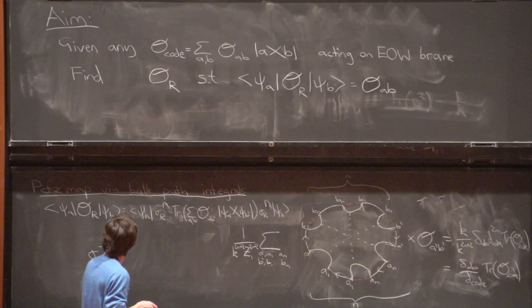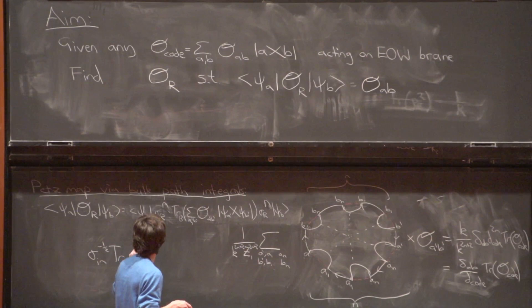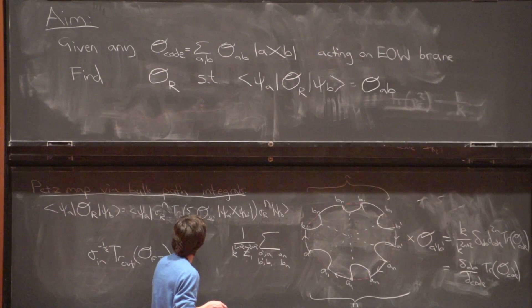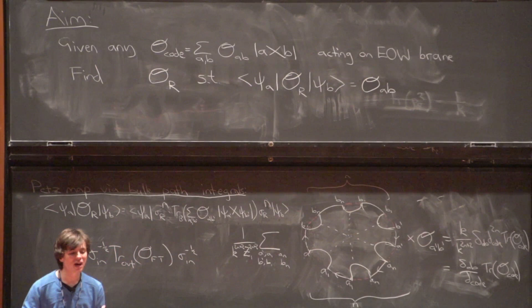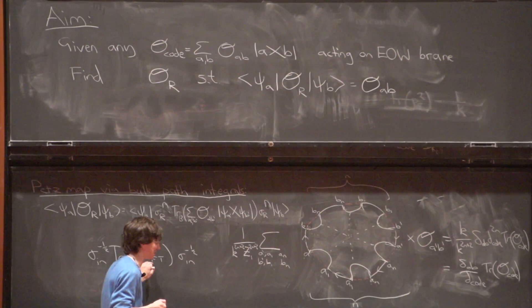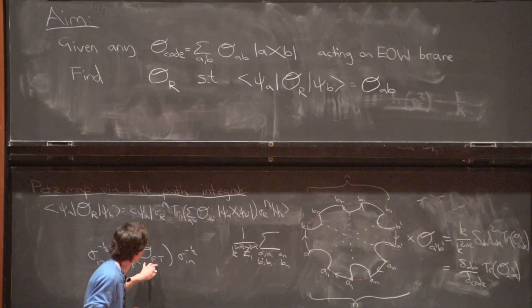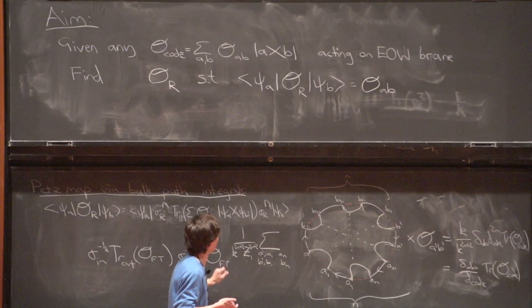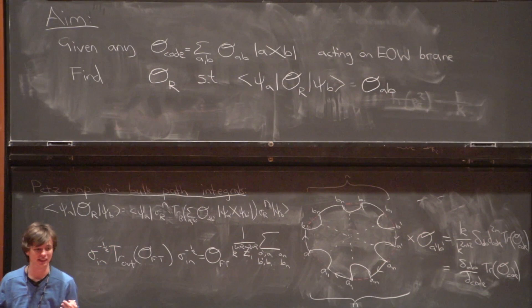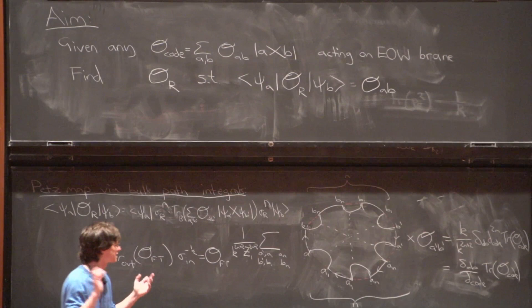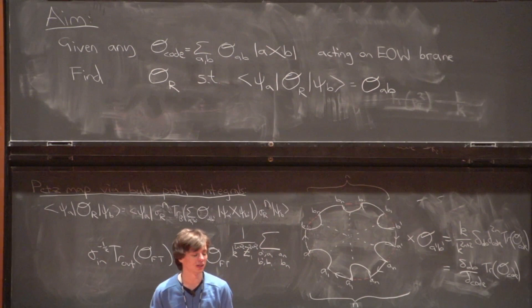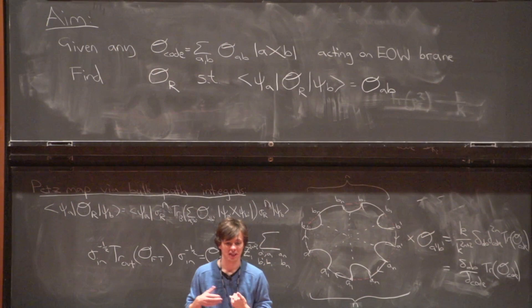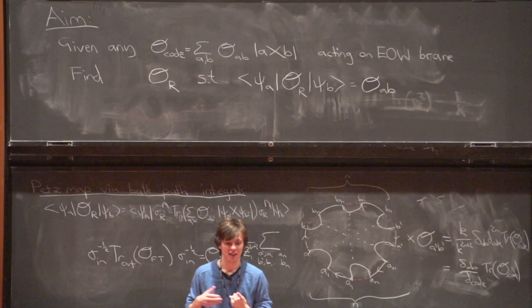When you look at this whole thing, what you find is that the resulting operator is a Petz map in the field theory: it takes the field theory bulk operator and applies a Petz map to make it an operator acting only on the interior of the black hole — or more generally, only in the entanglement wedge. It looks like σ^{-1/2} Tr_{out}[O_field theory] σ^{-1/2} on the inside. We know the Petz map works whenever all the information in the operator is acting in the stuff you kept: if our operator acts entirely inside, this thing just reproduces the field theory operator. And the most exciting thing is that when you do it on the Hawking radiation, it acts in the interior of the black hole. That's all I have — thanks.